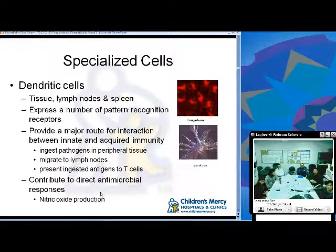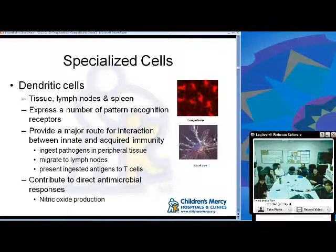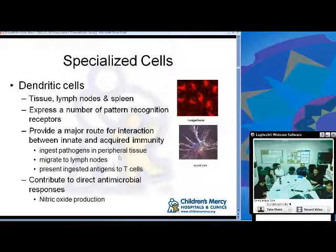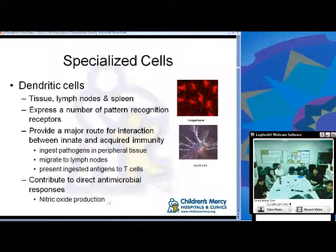Dendritic cells are found in tissue, lymph nodes, and spleen. In the skin they're called Langerhans cells. They express a number of pattern recognition receptors and provide a major route for interaction between innate and acquired immunity. These cells can ingest pathogens in peripheral tissue, migrate to lymph nodes, and present ingested antigens to T cells. They can also contribute to direct antimicrobial responses by producing nitric oxide.